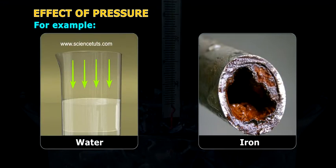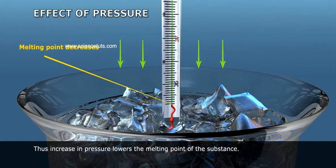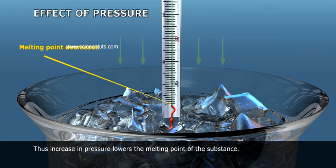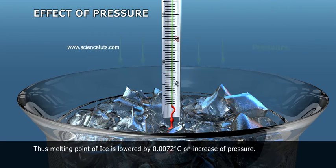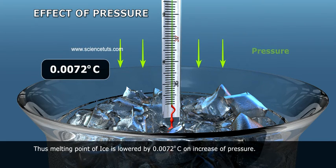For example, water, iron, etc. Thus, increase in pressure lowers the melting point of the substance. The melting point of ice is lowered by 0.0072 degrees Celsius on increase of pressure.